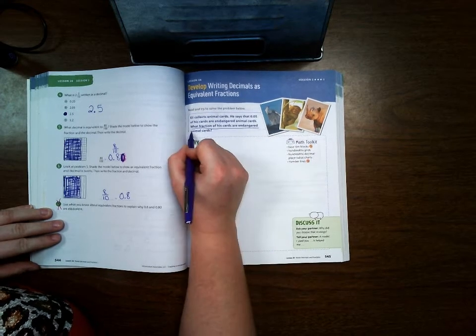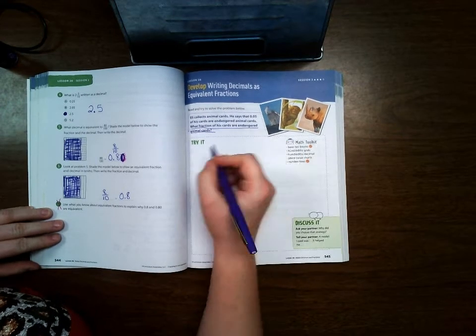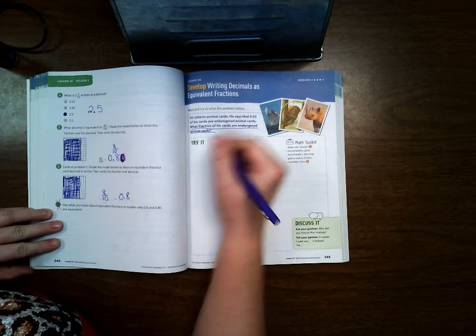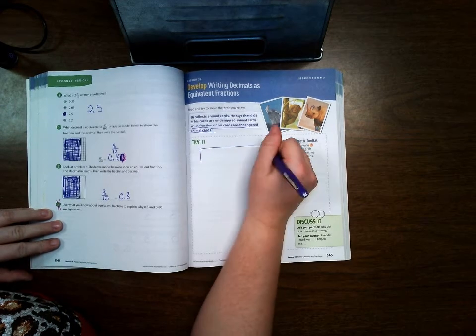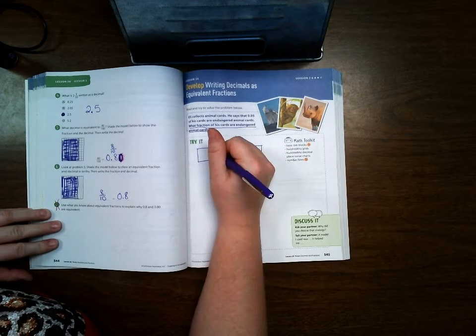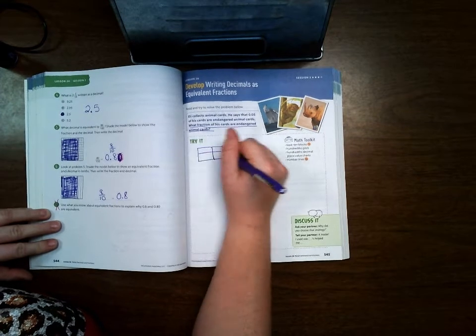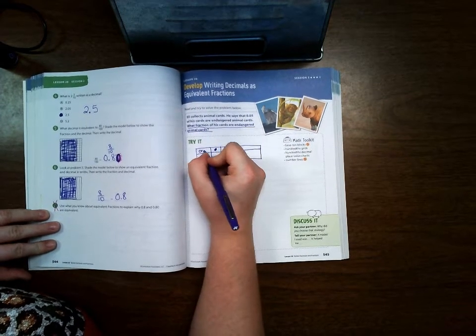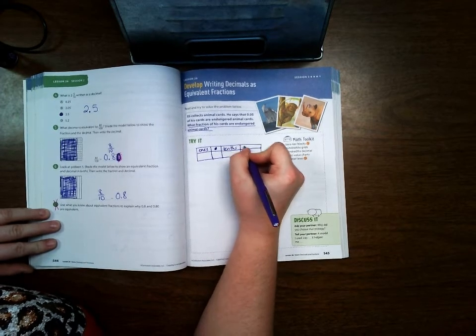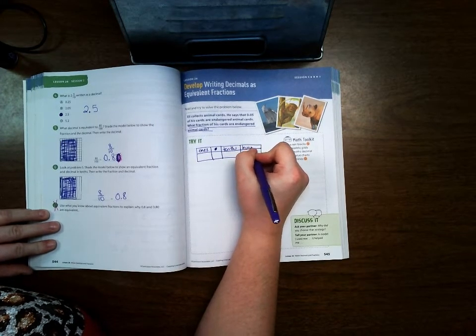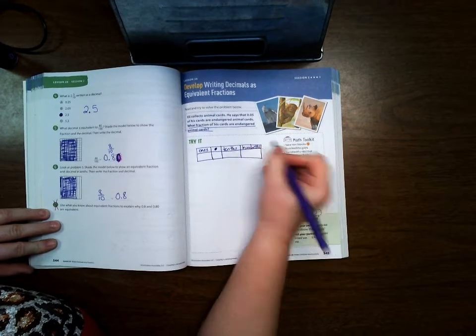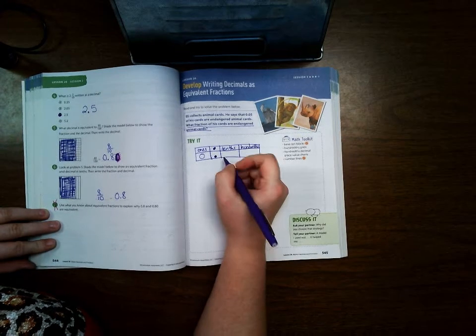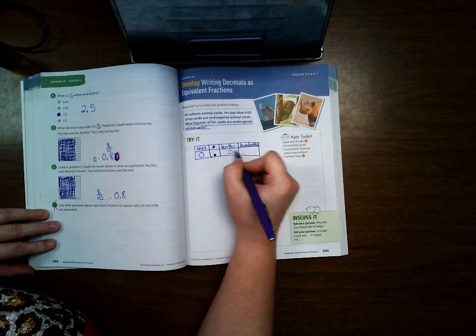So it's wanting us to write five hundredths as a fraction. If I were to put this in a place value chart that has decimals and fractions, this is ones, tenths, hundredths. I would write it as zero for no whole numbers, decimal point zero five.